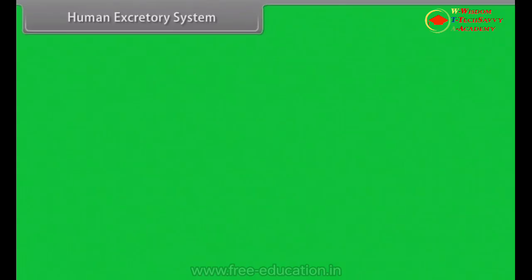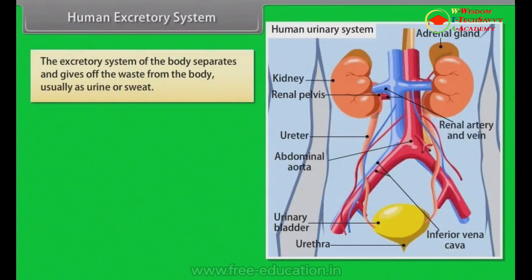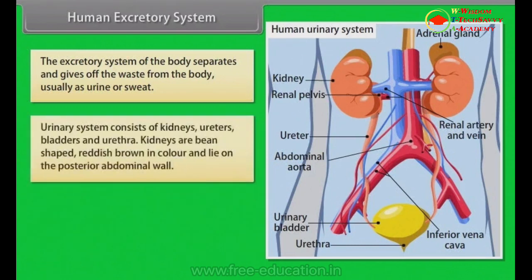Human excretory system. The excretory system of the body separates and gives off waste from the body, usually as urine or sweat. The urinary system consists of kidneys, ureters, bladder, and urethra.